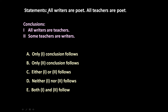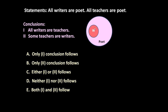First, let us convert these two statements into Venn diagrams. All writers are poets — this means the writers circle is inside the poets circle. All teachers are poets — all teachers are also poets. This is one way of representation.